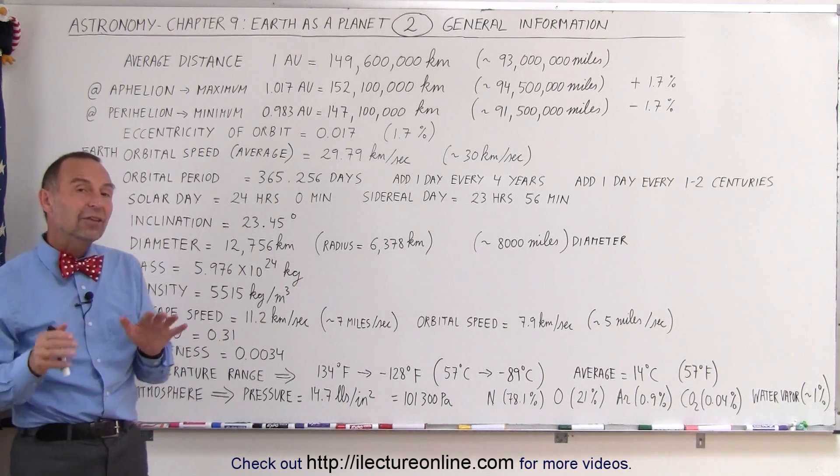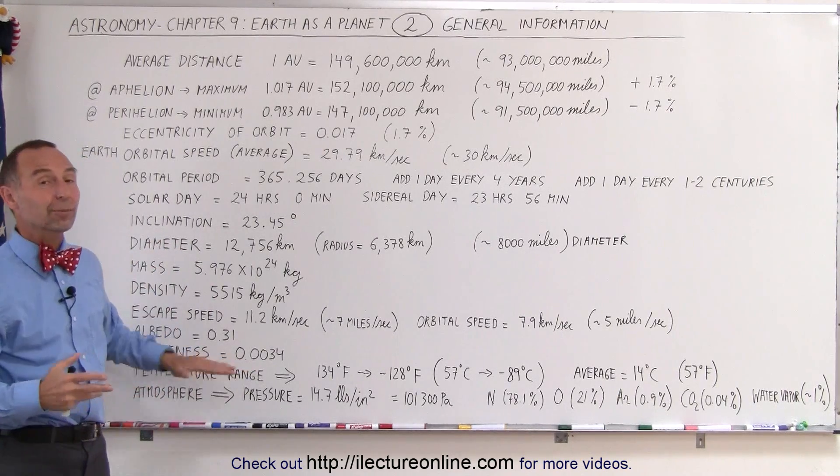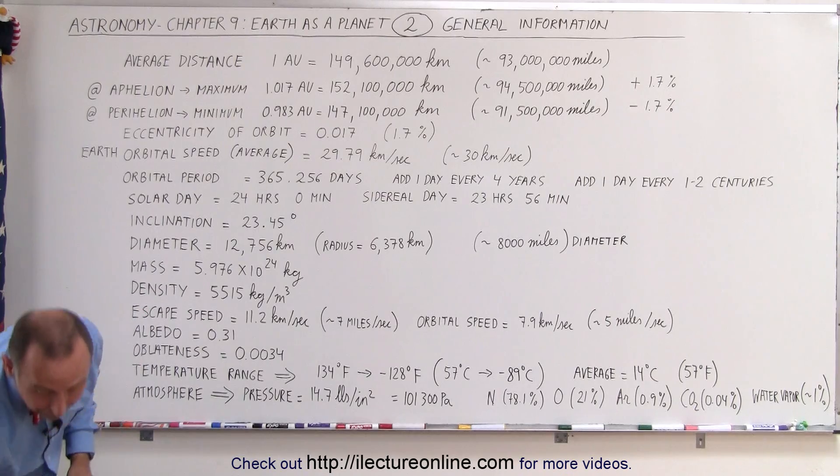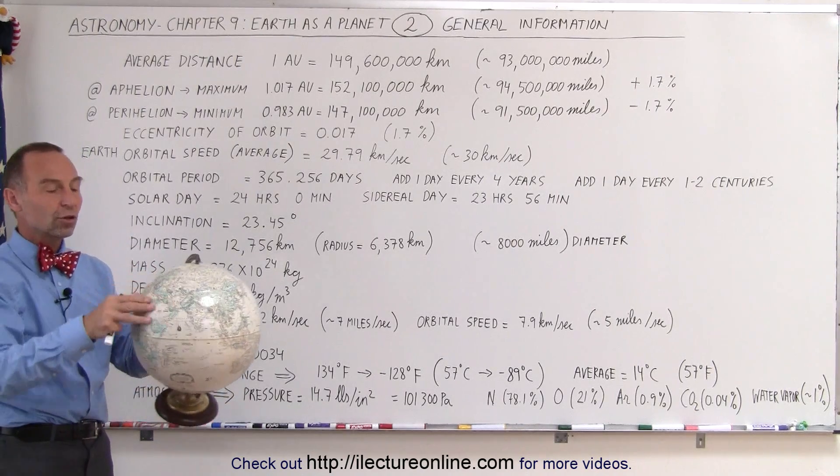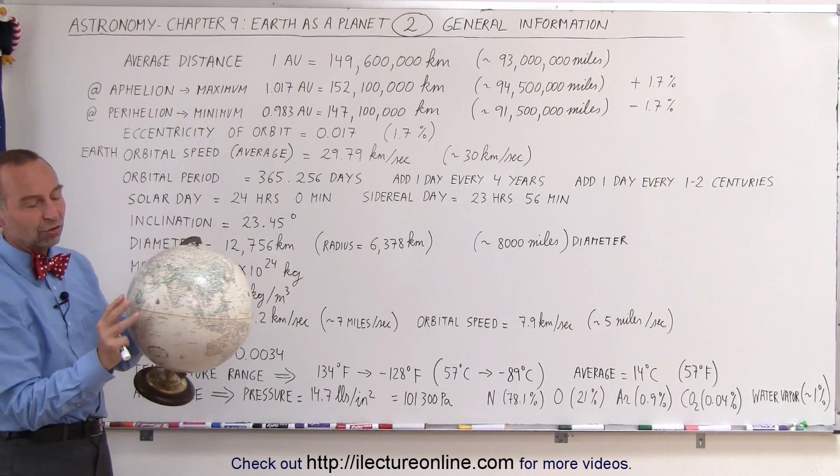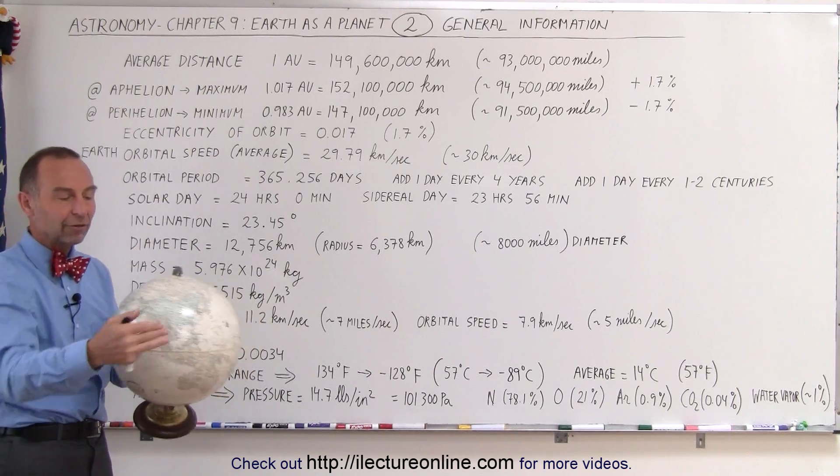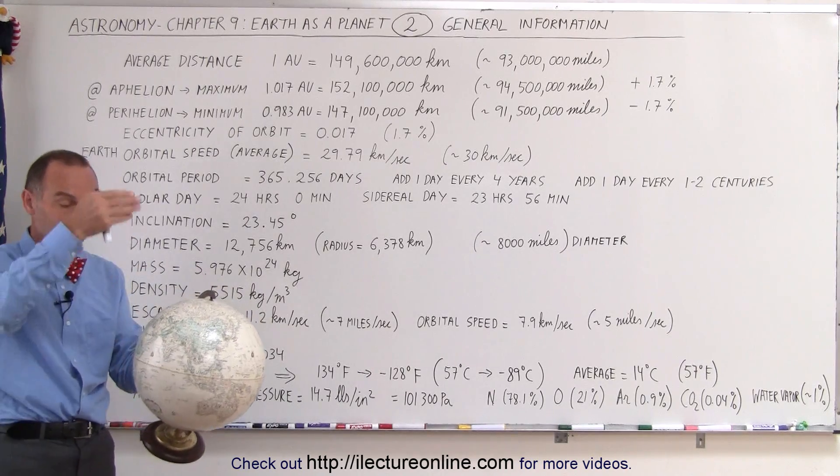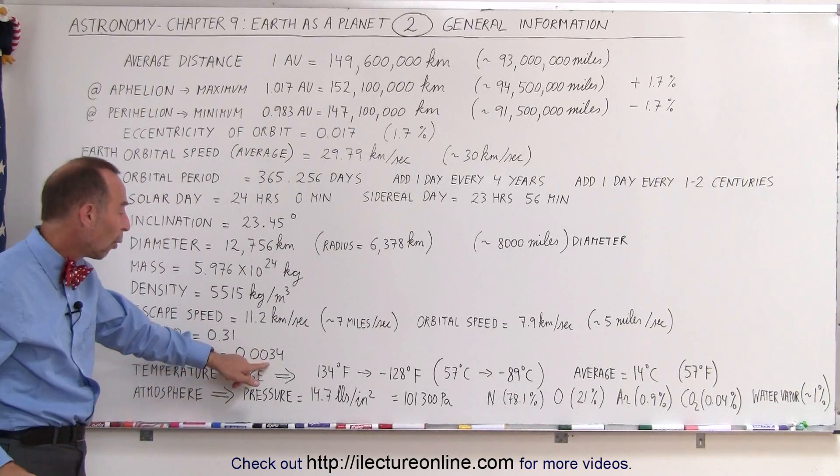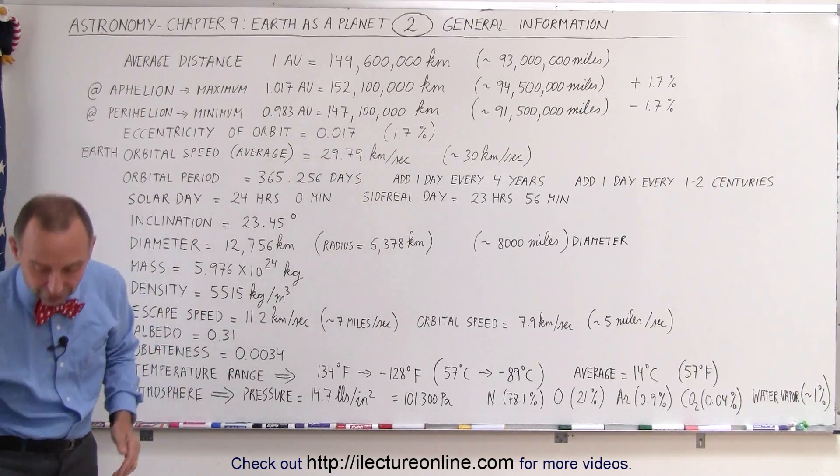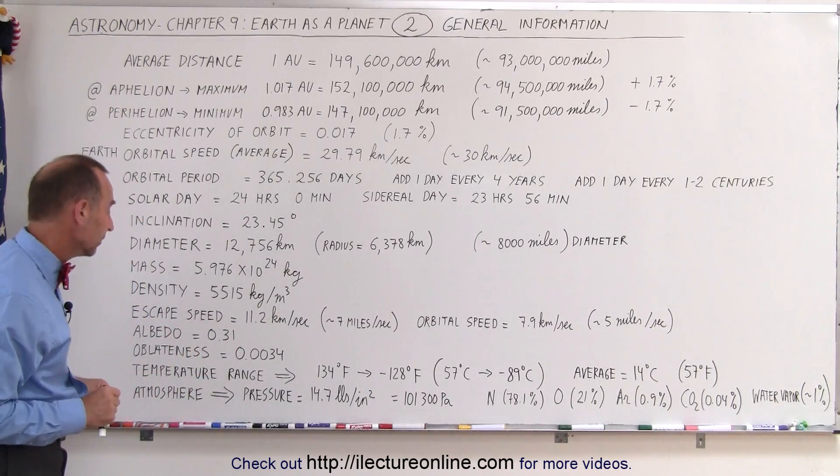The oblateness is an indication of how round the Earth is. If it's perfectly round, this would be zero, but it's not perfectly round. It turns out, because of the rotational motion of the Earth, the centripetal forces cause the Earth to bulge a little bit more on the side, and so therefore it is wider along the equator than it is from pole to pole, so there's a slight difference. Notice it's about 0.34% difference in the diameter of the Earth from pole to pole versus from equator to equator.